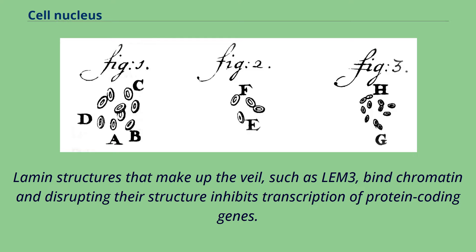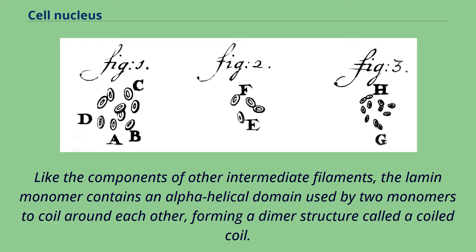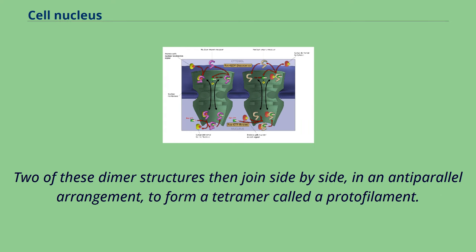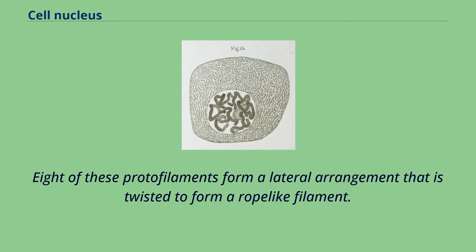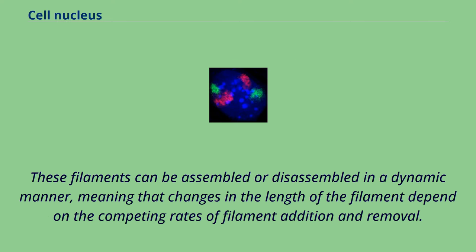Like the components of other intermediate filaments, the lamin monomer contains an alpha-helical domain used by two monomers to coil around each other, forming a dimer structure called a coiled coil. Two of these dimer structures then join side by side in an anti-parallel arrangement to form a tetramer called a protofilament. Eight of these protofilaments form a lateral arrangement that is twisted to form a rope-like filament. These filaments can be assembled or disassembled in a dynamic manner, meaning that changes in the length of the filament depend on the competing rates of filament addition and removal.